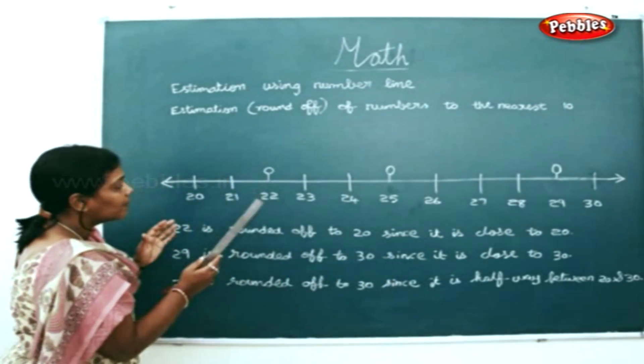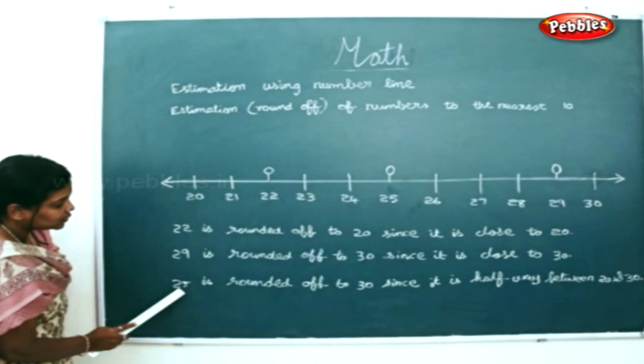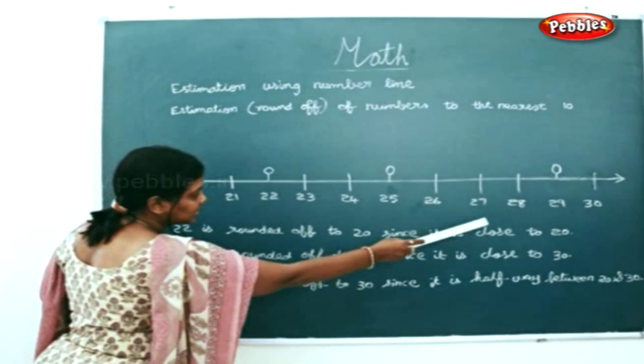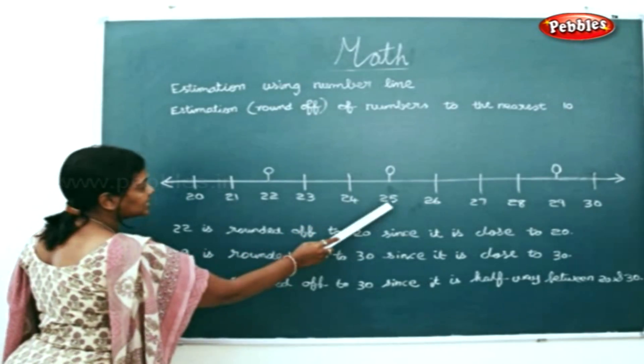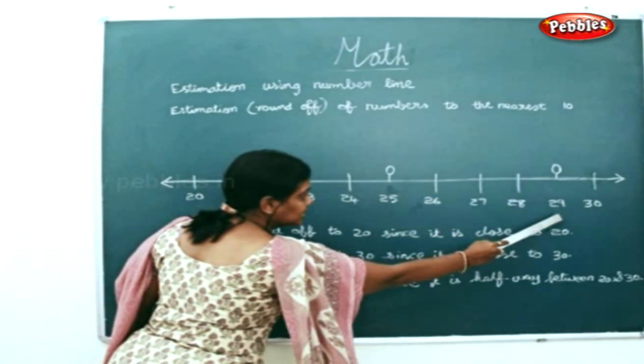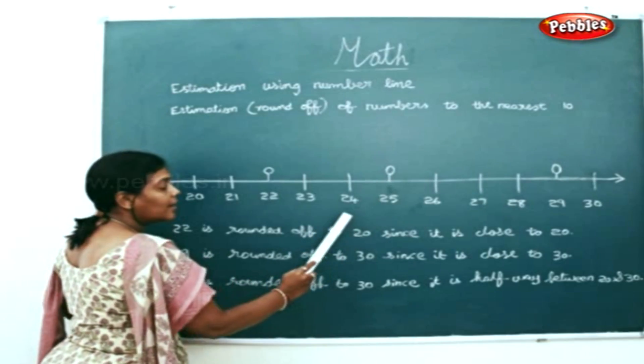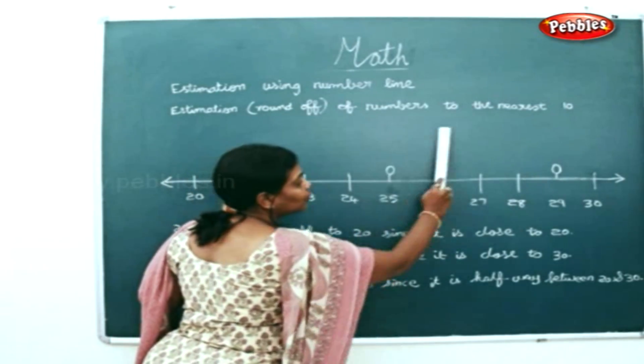We're rounding off the numbers which is to the closest tens. Now 25 is rounded to 30 since it is in the middle. If you can see 25 is in the middle of 20 and 30. But we will be rounding off to the bigger number. We'll be rounding off to 30.